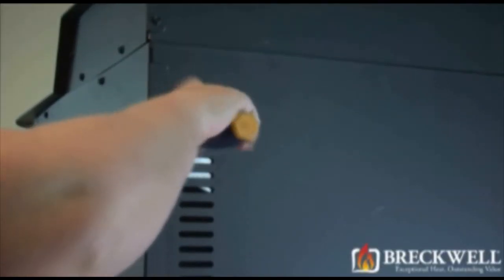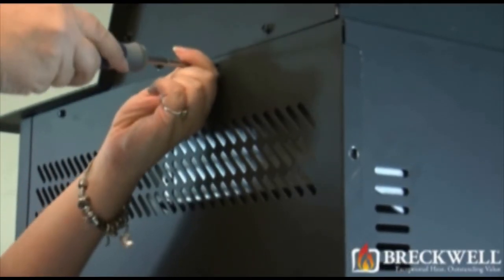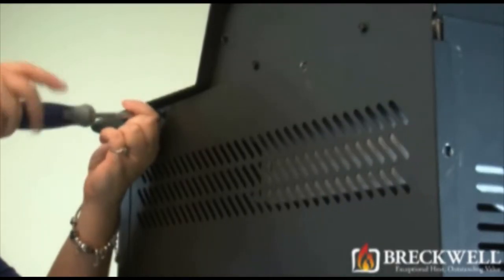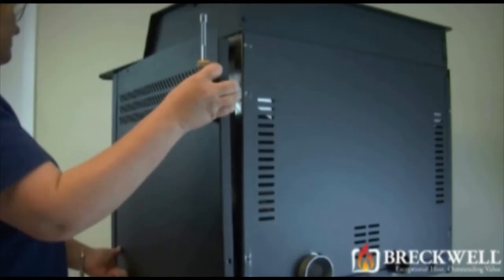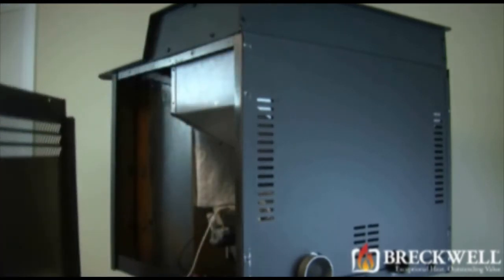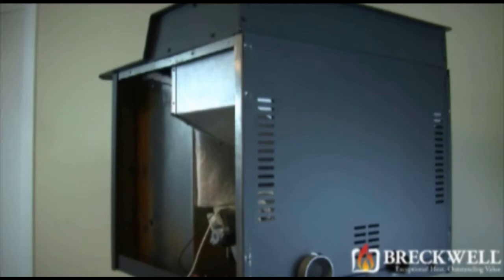To access the exhaust blower, we first need to remove the right hand side panel of the stove. To do this, remove the two screws on the back and then the two screws on the top of that panel. You can then lift the panel back, out and away from your stove and set it aside away from your work area.